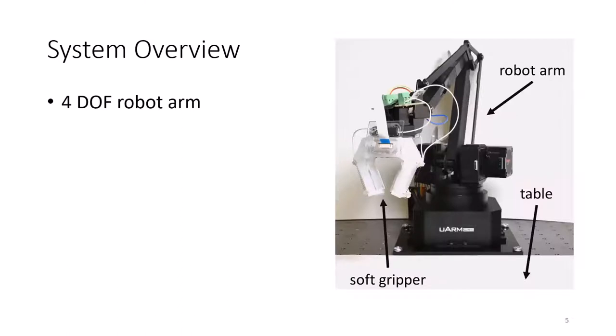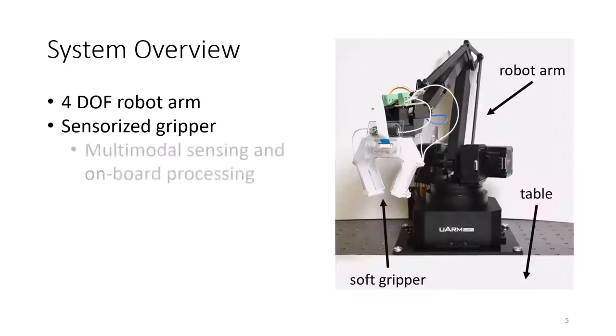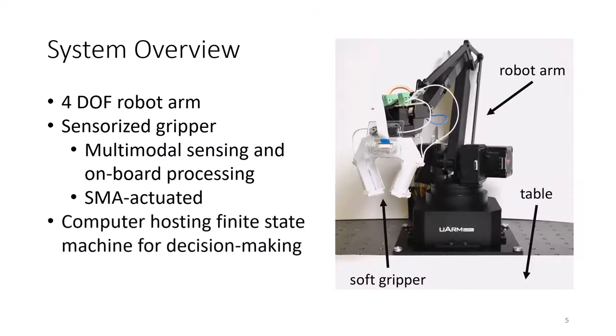The system consists of a four-degree-of-freedom rigid robot arm, and the sensorized gripper that has the sensor skin with the sensors mentioned in the previous slide: time-of-flight, pressure, and IMU, and onboard processing. The gripper is actuated by shape-memory alloy springs, abbreviated as SMA, and actuates between binary open and closed states. And it's not shown in this figure, but there's a computer that hosts the finite state machine for decision-making and further sensor data processing.